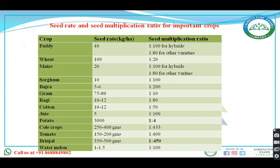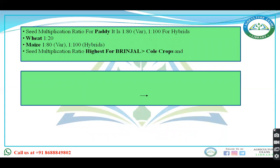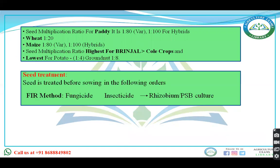For wheat, the seed multiplication ratio is 1:20. The highest seed multiplication ratio among field crops is for brinjal, followed by cool-season crops, and the lowest is for potato, then groundnut. In Bank of Maharashtra examinations, potato was not in the options so the answer was groundnut. Seed treatment order: first apply fungicide, then insecticide, then rhizobium inoculant.